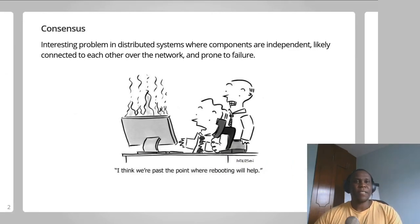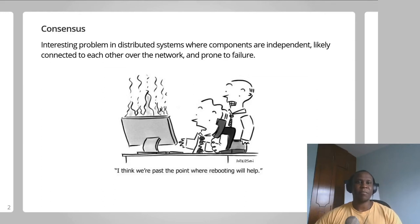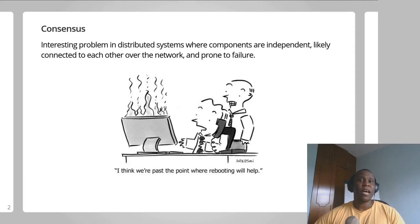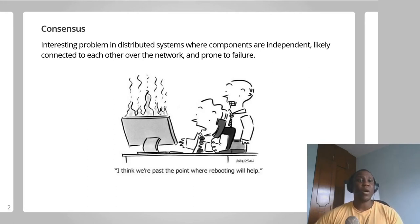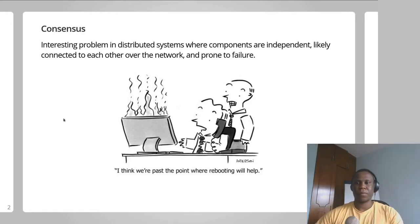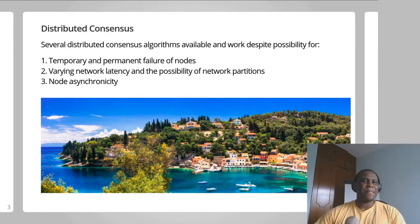However, consensus in distributed systems is a non-trivial problem due to the nature of distributed systems. Distributed systems are generally assumed to contain independent components — which I'll call nodes — that are connected to each other over a network. It is expected that both the nodes and the network connecting the nodes are prone to failure. The big consensus problem in distributed systems is how to achieve consensus when some of the nodes that are expected to agree on something aren't all reachable at the same time, but are likely to be reachable at some point in time.